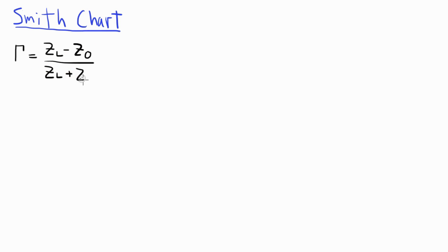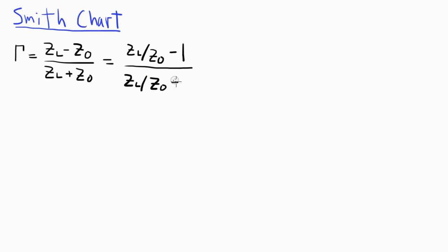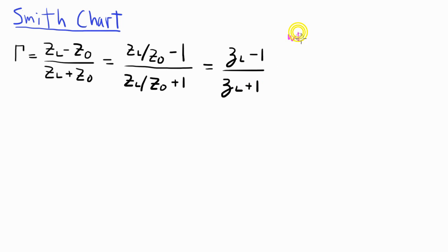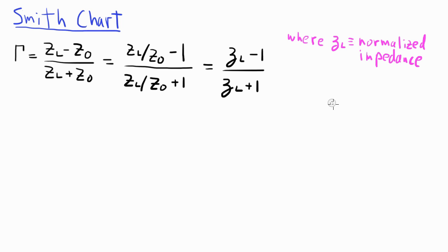First let's take a look at the math behind the Smith chart. We start with the familiar equation for the reflection coefficient gamma, and we can normalize it by dividing by the characteristic impedance Z0. This gives us little zl minus 1 over zl plus 1, where little zl is the normalized impedance — the actual load impedance big ZL divided by the characteristic impedance Z0, typically 50 ohms.